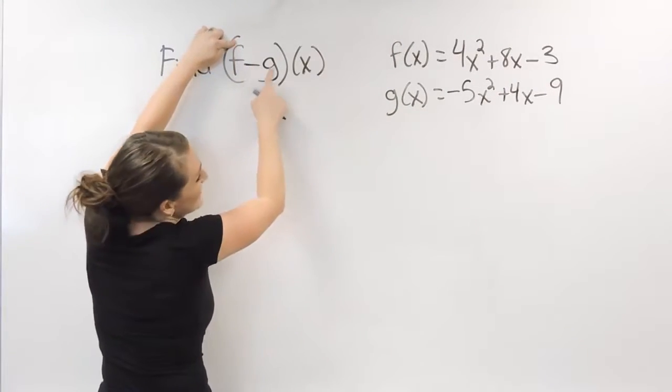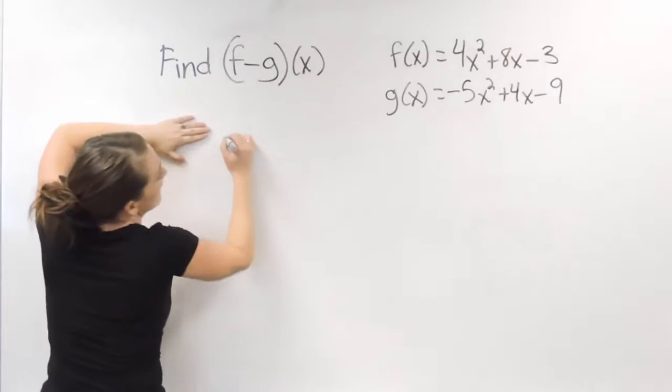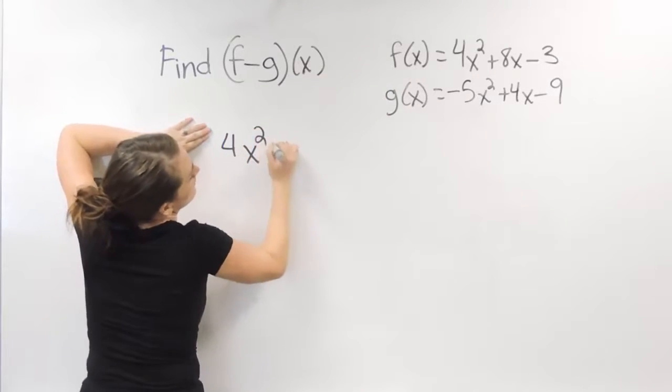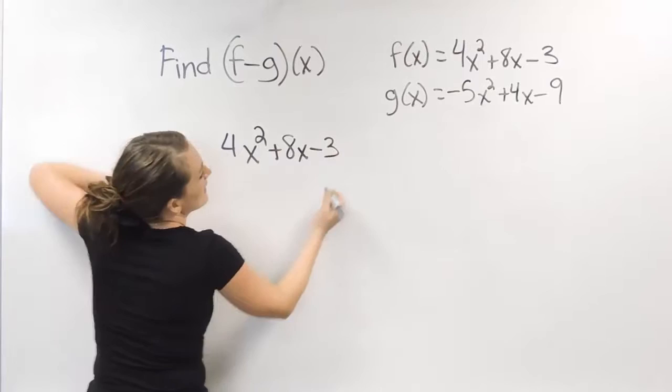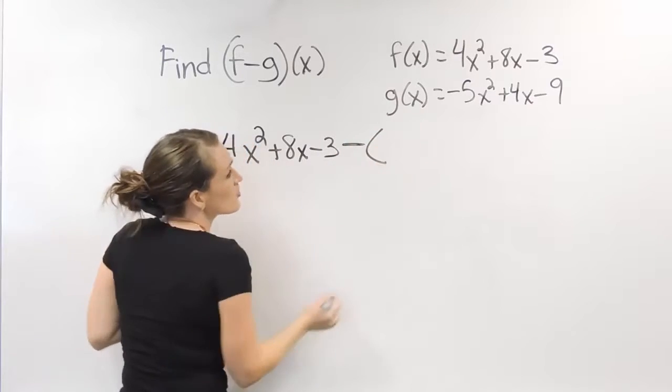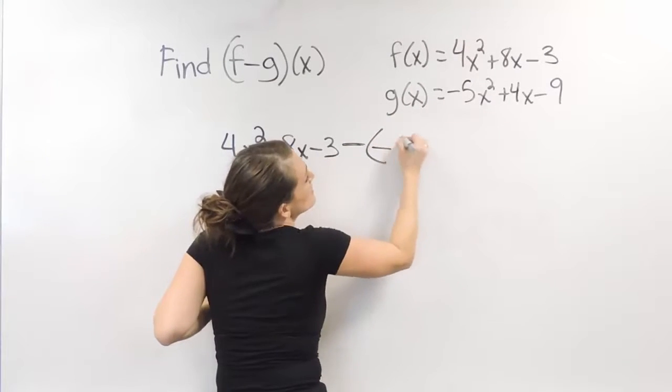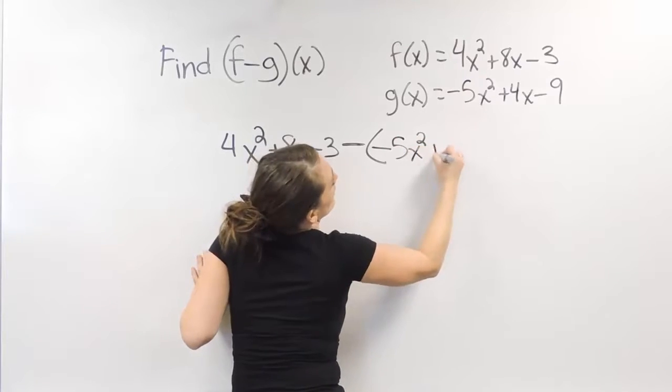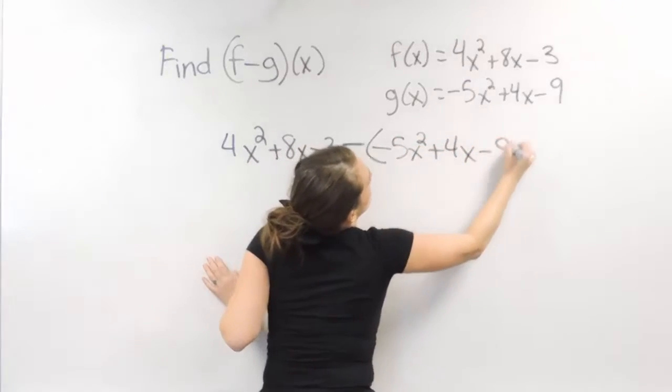So we're going to take f minus g. So f(x) is 4x² + 8x - 3, and we are going to subtract g(x), which is -5x² + 4x - 9.